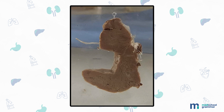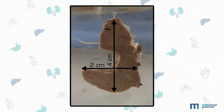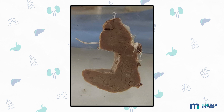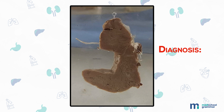Next we have a specimen of a lobe of thyroid gland measuring 4 by 2 by 0.5 centimeters. External surface is lobular; capsule is intact. The cut surface appears homogeneous and grayish-white. Colloid-filled cysts are not seen; normal thyroid tissue is not seen. Diagnosis: Hashimoto's thyroiditis.